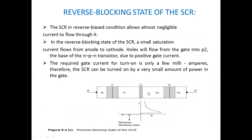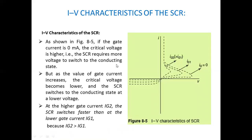For thyristor turn-on, increasing the anode current can be accomplished in different ways: thermal turn-on, using light, using high voltage dv/dt triggering — these are triggering methods which will be discussed in the next class on thyristor turn-on and turn-off methods of an SCR. I hope that all of you understand about the SCR operation, characteristics, schematic diagram symbol, and all the values. Thank you.